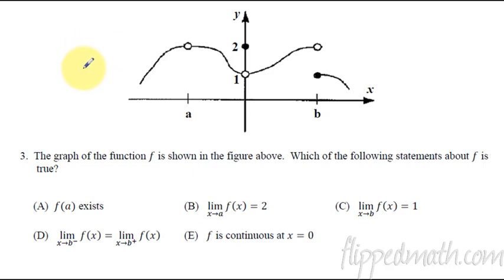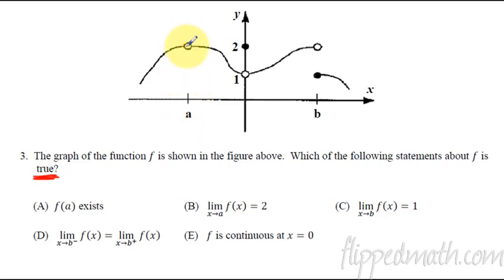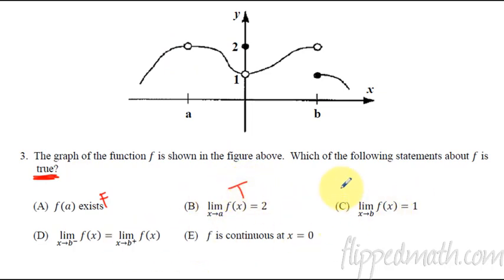This one's not too bad — you're just looking at the graph. The question asks which statement about f is true, so be careful. It might be best to go through each option and write true or false, then circle the true one. Sometimes you might accidentally get two trues, which means you made a mistake. f(a) — does a y-value exist there? No, it doesn't. So that one is false.